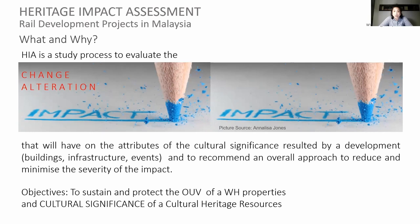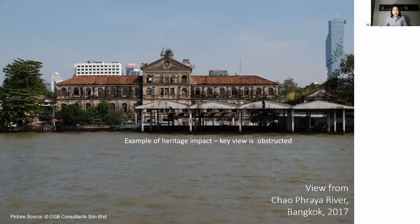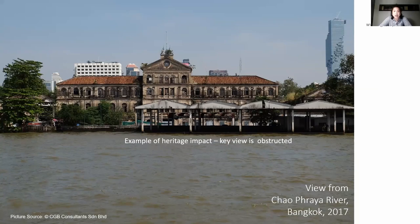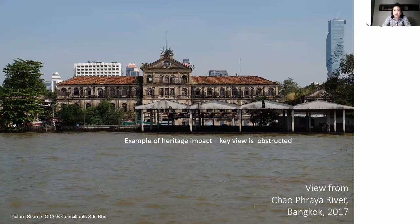The objective is to sustain and protect the Outstanding Universal Value of World Heritage properties and the cultural significance of cultural heritage resources. To illustrate what HIA is through pictures: here is an example of a heritage impact where a key view is being obstructed by a jetty. Something is obstructing the key view — this is just one example of a heritage impact, specifically a visual impact.